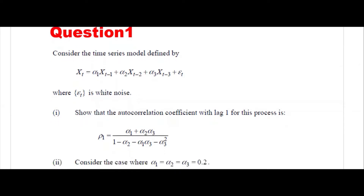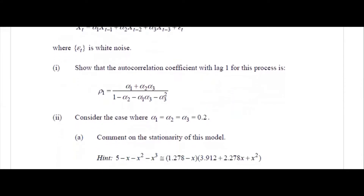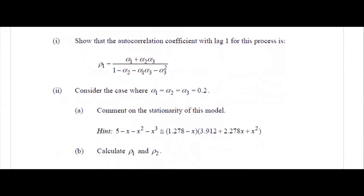If you see rho 1 here, that is alpha 1 plus alpha 2 times alpha 3, divided by 1 minus alpha 2, whatever. So this expression on the right is what you need to find. Given the values of alpha 1, alpha 2, alpha 3, you need to find rho 1 and rho 2.